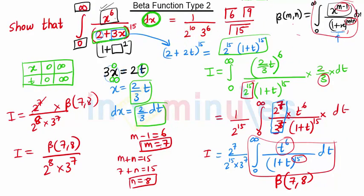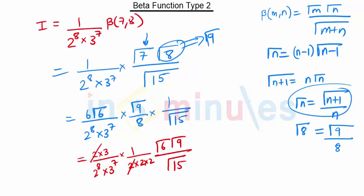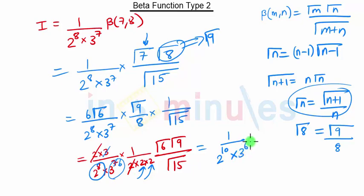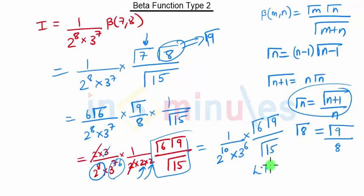Now we have to just solve for this term. The 6 can be represented as 2 into 3, upon 2 raise to 8 into 3 raise to 7. And 8 can be represented as 2 into 2 into 2. One 2 from here will get cancelled and one 3 from here will get cancelled. We get 1 upon 2 raise to 10 into 3 raise to 6, into gamma of 6 into gamma of 9 upon gamma of 15. Both terms are similar, so left hand side is equal to right hand side — hence proved.